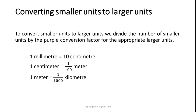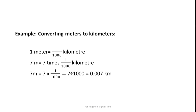To convert smaller units to larger units, divide by the conversion factor. For example, to convert centimetres to metres, divide by 100. To convert metres to kilometres, divide by 1000. For example, 1 metre equals 1 upon 1000 kilometres, so 7 metres equals 7 divided by 1000, which is 0.007 kilometres.